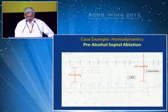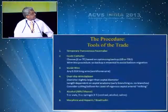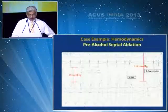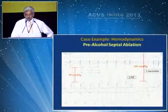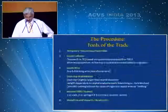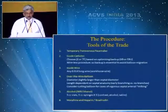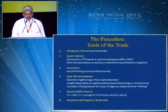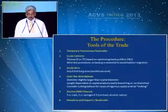This is a typical gradient of a patient pre-alcohol septal ablation — the gradient is about 90 mmHg before the procedure, and during post-PVC augmentation it runs up to 220 mmHg. The tools of the trade for this procedure include a temporary transvenous pacemaker catheter in the right ventricle and a guiding catheter — choose a 6 or 7 French based on optimum backup.